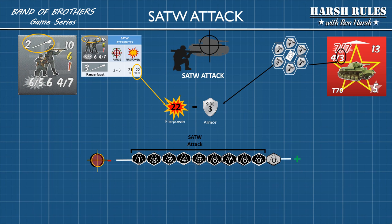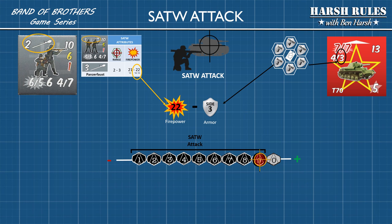Once you've passed the SATW check, it's time to see if your shot destroyed the target. You take the firepower of the SATW and subtract the armor of the vehicle you're attacking. In this instance, we're using a late-year Panzerfaust with a firepower of 22, minus a T-70 side armor of 3, meaning you would need to roll a 19 to hit. With this overwhelming firepower you might assume you'd automatically destroy the tank, but there's always a 1 in 10 chance of a miss. So a roll of 9 or less destroys the tank, but a roll of 10 is a miss.